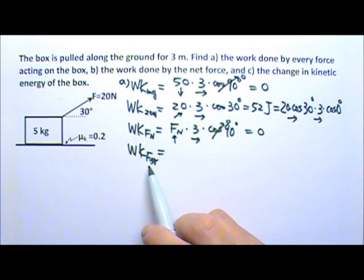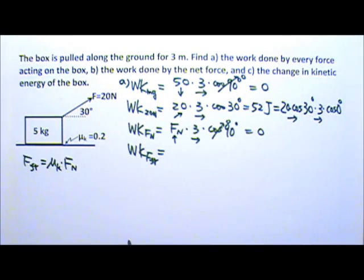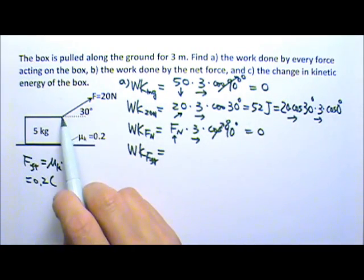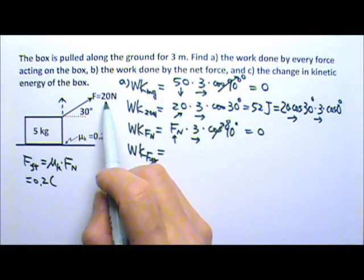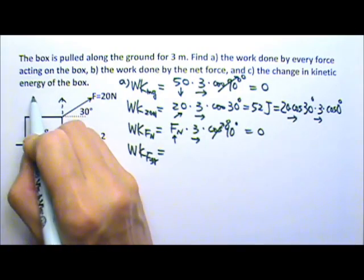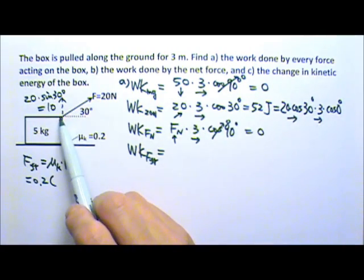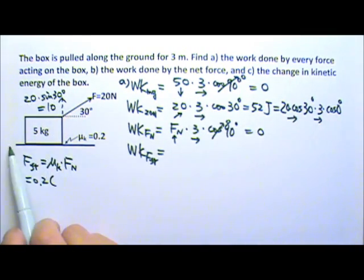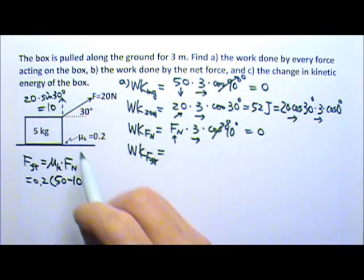To find the work done by friction, we first need to find the friction force: friction equals mu K times the normal force, with mu K = 0.2. The normal force here is not simply the weight of 50 N, because the slanted force has an upward component that complicates things. That upward component is opposite the angle, so it is 20 times sin(30°), which equals 10 N. This means the slanted force is effectively lifting the box by 10 N, making the box seem lighter to the ground, so the normal force is 50 minus 10.